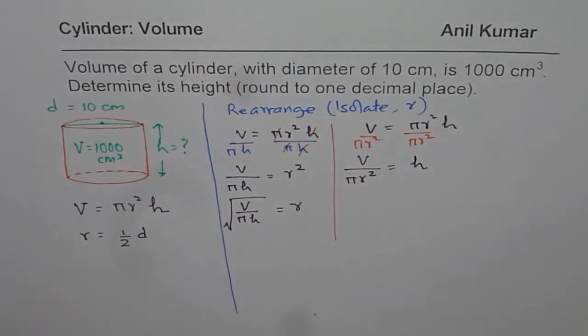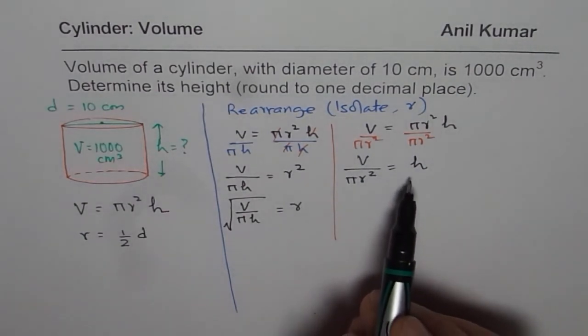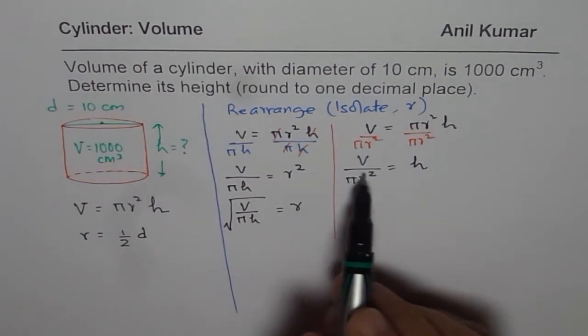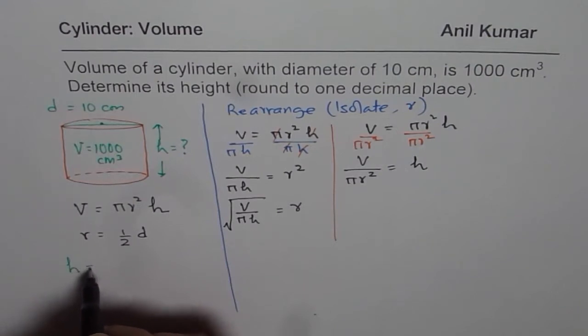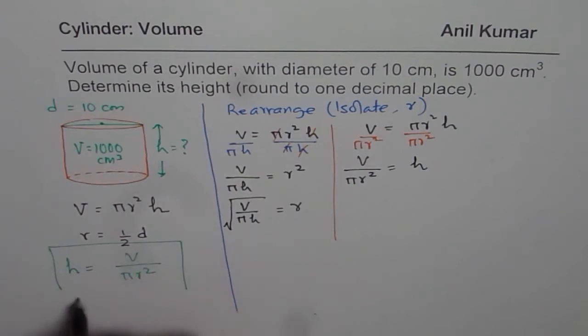You understand how we can find height or radius from this formula. So let me write down height as V/(πr²). So that becomes the formula which we can apply to find the height in this given question.